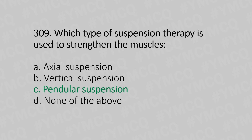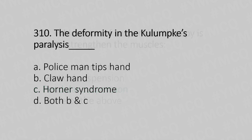Question 310: The deformity in Klumpke's palsy is — Option A: policeman's tip hand. Option B: claw hand. Option C: Horner syndrome. Option D: both B and C. The answer is Option D, both B and C.